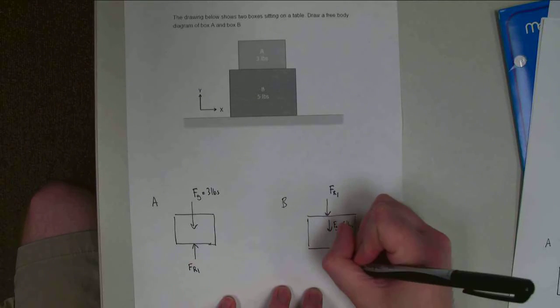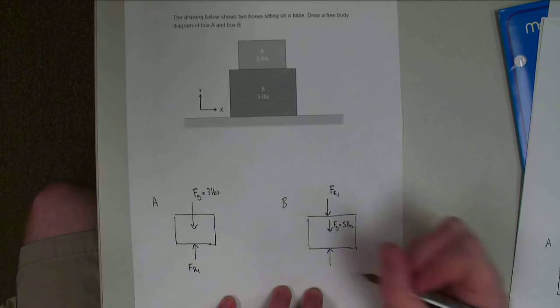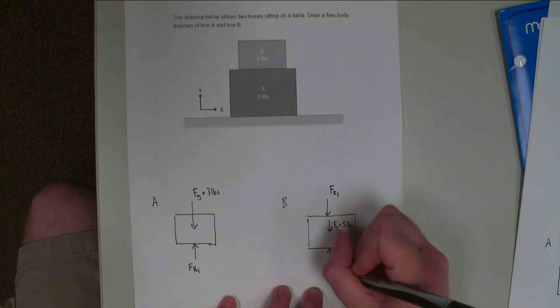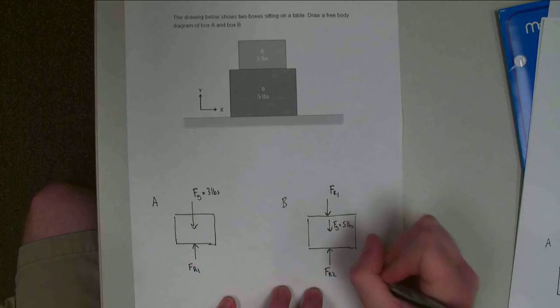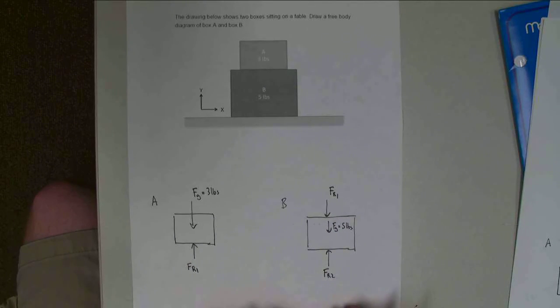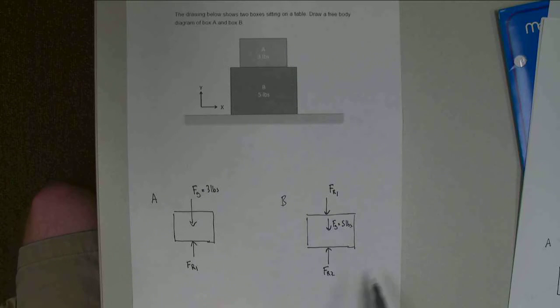The second one, in contact with the ground, I'm going to have another reaction force here. This one I'm going to call SR2. So with that, I've drawn body A, body B, and I've drawn all the forces acting on those bodies, so I've got my free body diagram. Thank you for watching, and I hope to see you again.